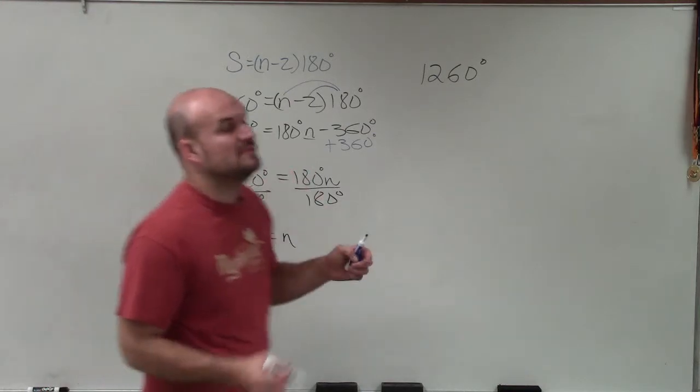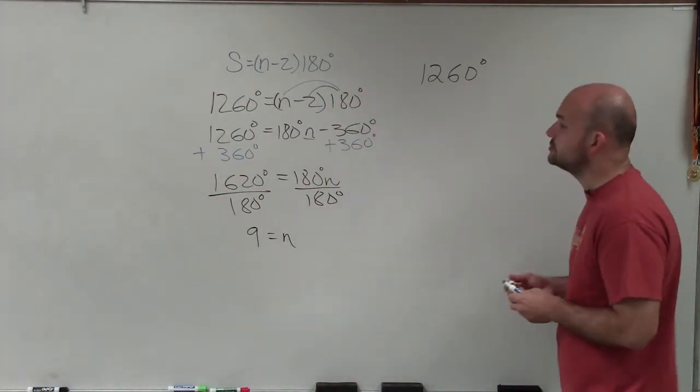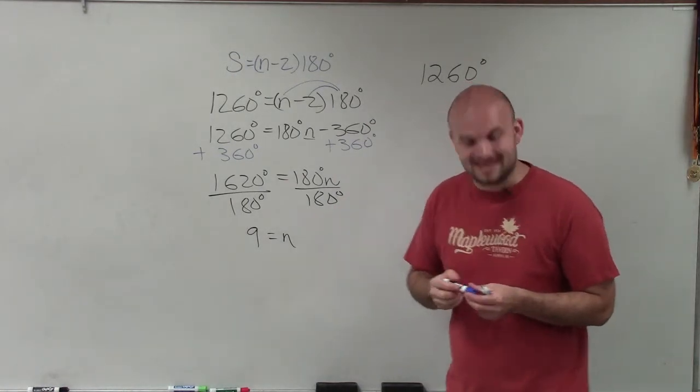Therefore, when the sum of the measures of the interior angles of a polygon is 1,260, I have nine sides, which is going to be a nonagon. Thanks.